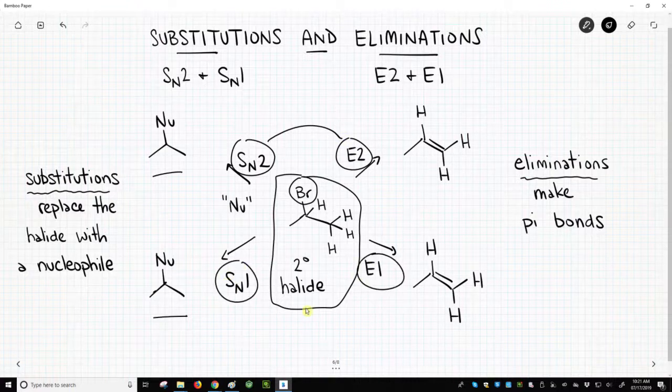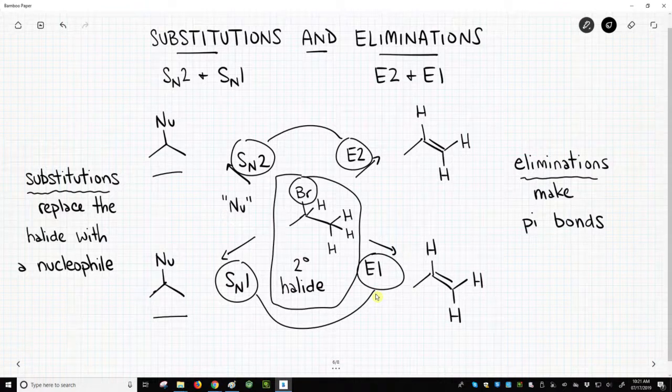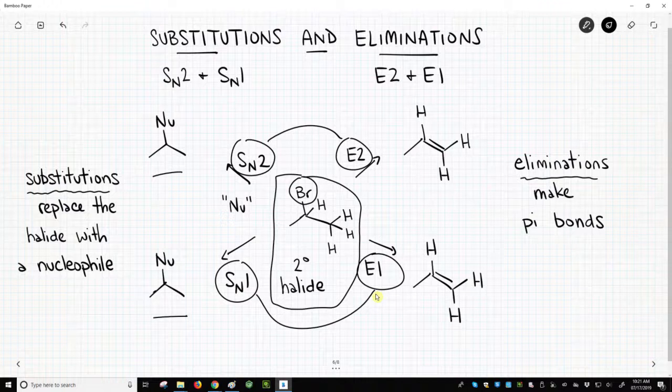And the SN1 and E1 tend to have shared traits that make them convenient to group that way. So I don't think of the substitutions together. I think of the SN2 and the E2 together as well as the SN1 and E1 together.